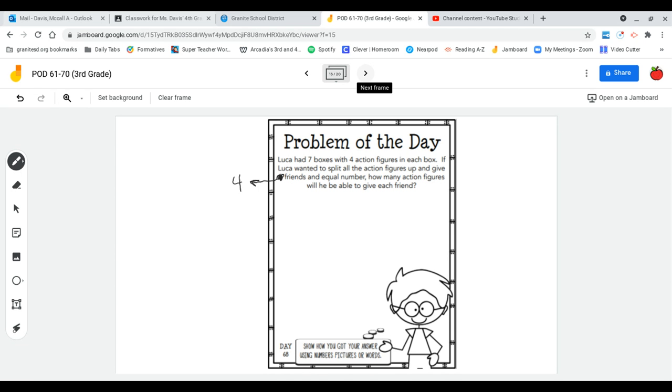Well, first we need to figure out how many action figures he had total. So he had seven boxes with four action figures in each box. Seven times four is 28, but I'm not done.